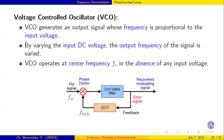The VCO operates at a center frequency in the absence of any input voltage. If there is no input, it generates a fixed frequency called the center frequency. When the input starts varying, the output frequency may go above or below this center frequency. For example, if the center frequency is 1 kHz, it may generate output above or below 1 kHz depending on the input.